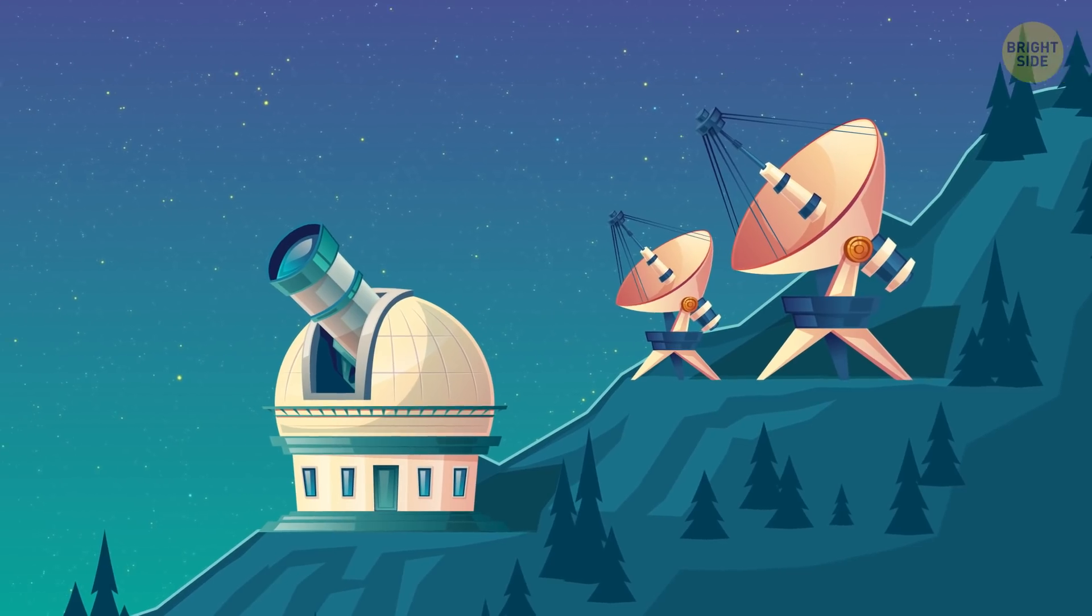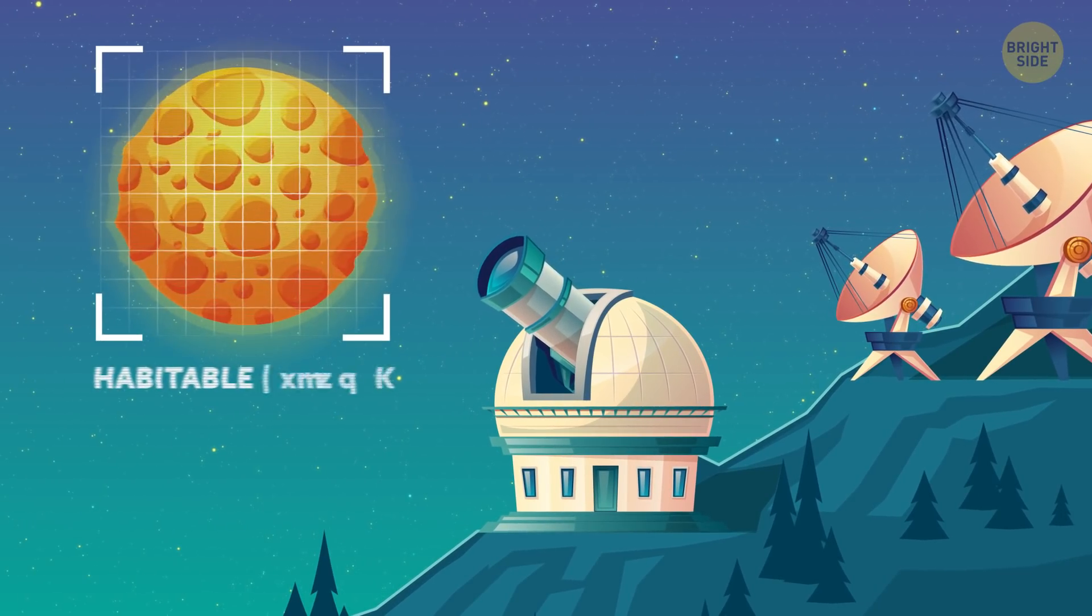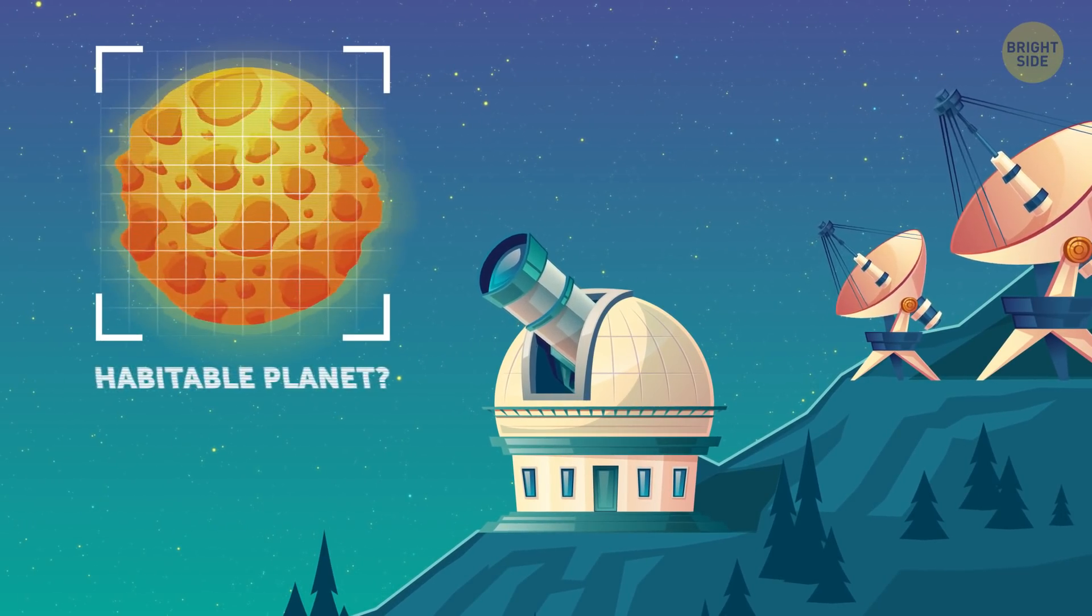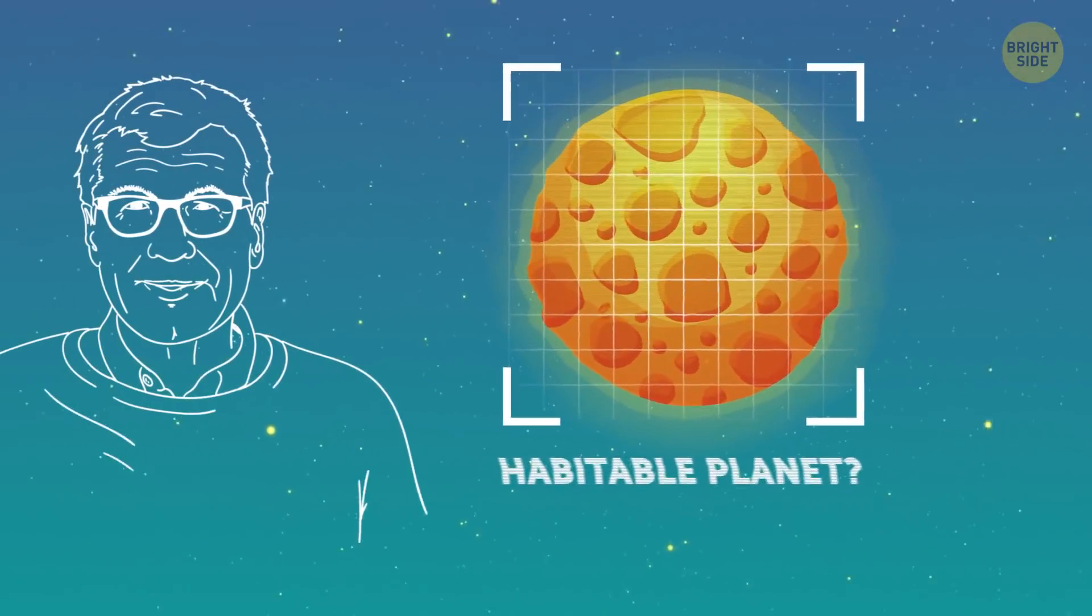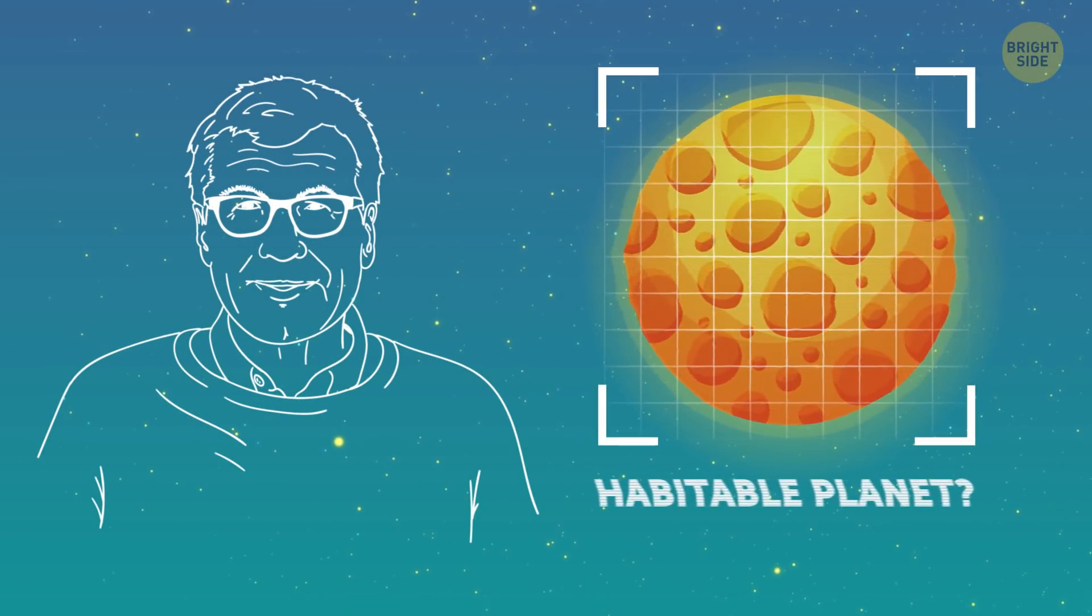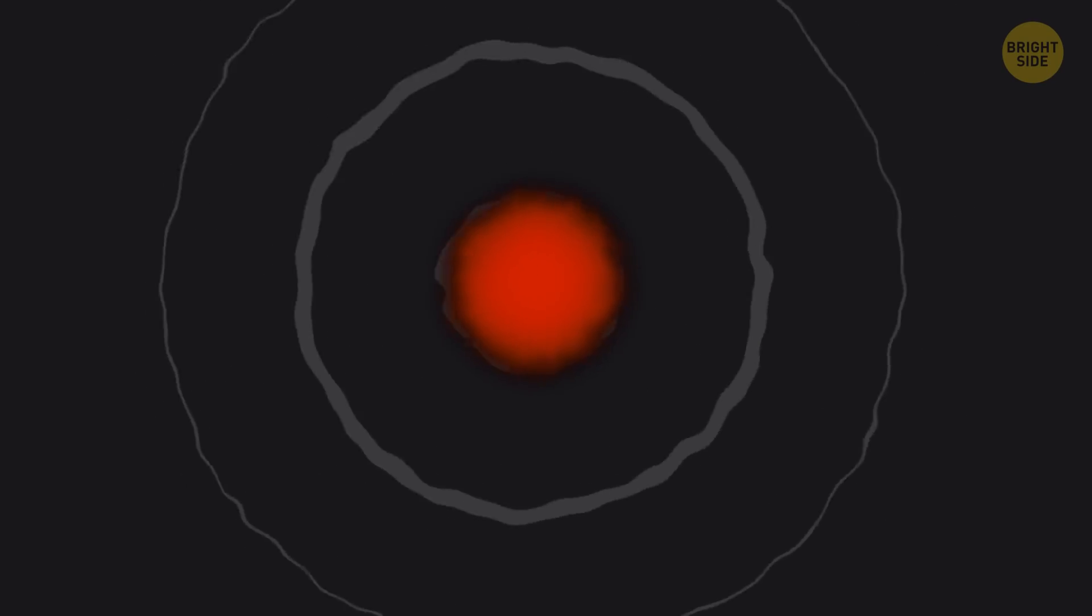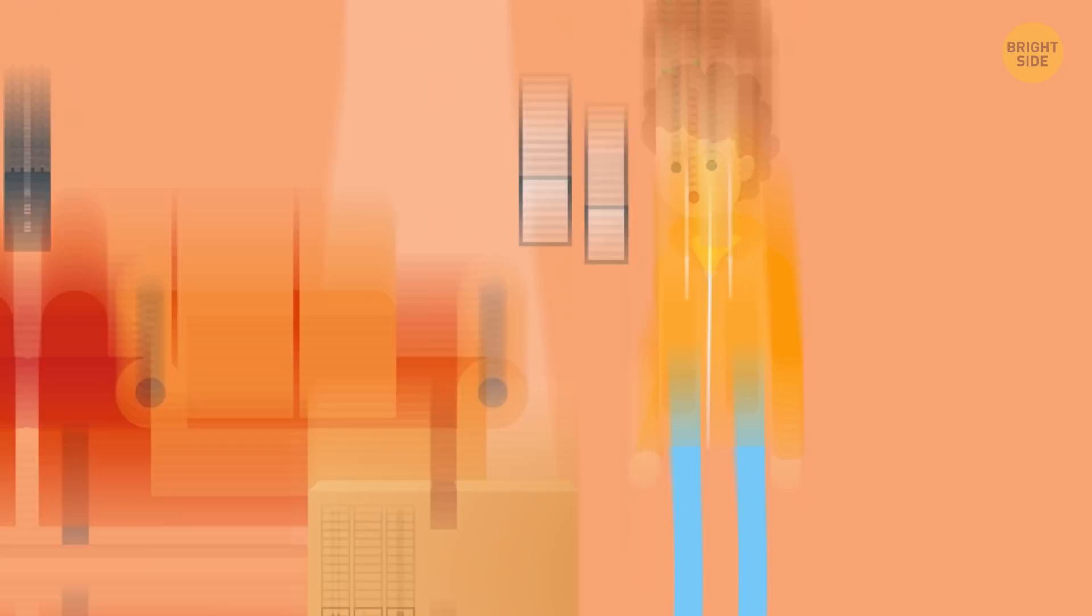So it's no wonder Barnard Star drew so much attention from astronomers. Okay, but what about all this talk about a habitable planet? I'm getting there. So the first person to assume there was a planet somewhere near the star was astronomer Peter van de Kamp back in the 60s. He observed wobbles in the star's movement. So wobbles equals planet? Well, yeah, pretty much.